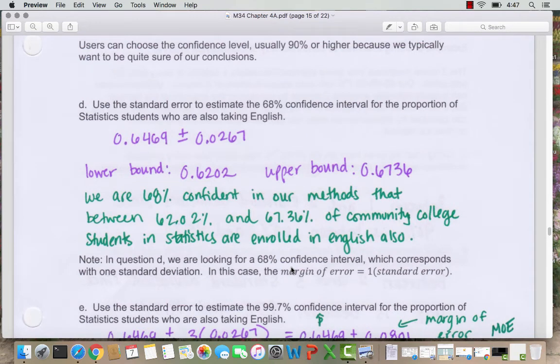You can choose, as a user, the confidence level. Typically we choose 90% or higher because we want to be quite sure of our conclusions. So let's think about what a 68% confidence interval would look like. Remember 68% corresponds with one standard deviation. So this is 0.6469 plus just one standard deviation here. We get 0.6202 as our lower bound from subtracting and 0.6736 as our upper bound from adding. So as a statement, we can say we are 68% confident in our methods that between 62.02% and 67.36% of community college students in statistics are enrolled in English also.